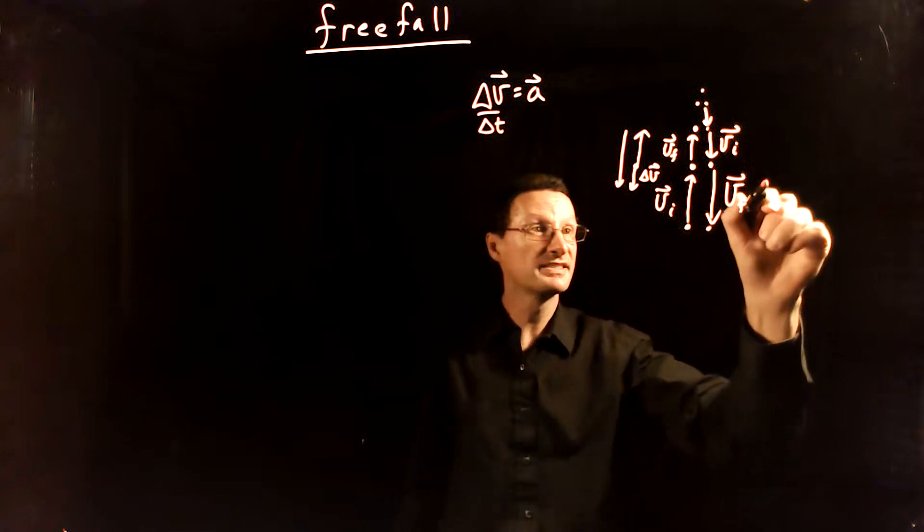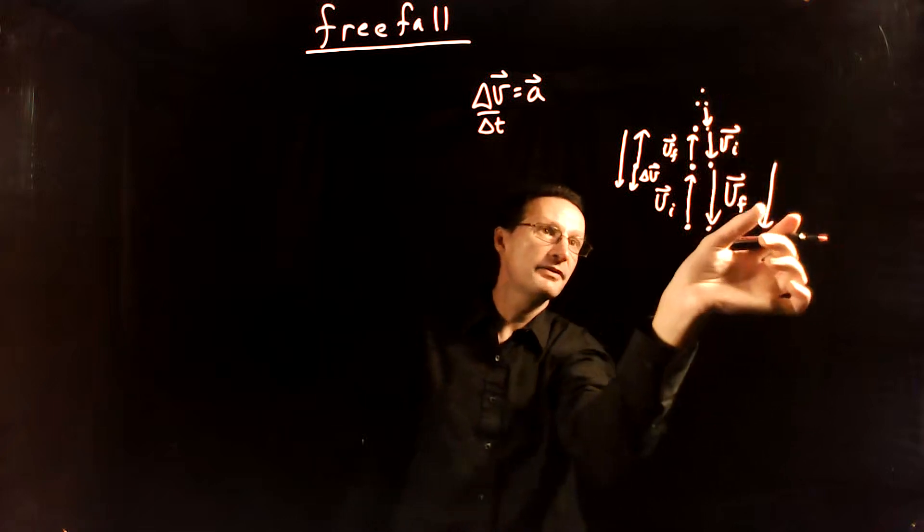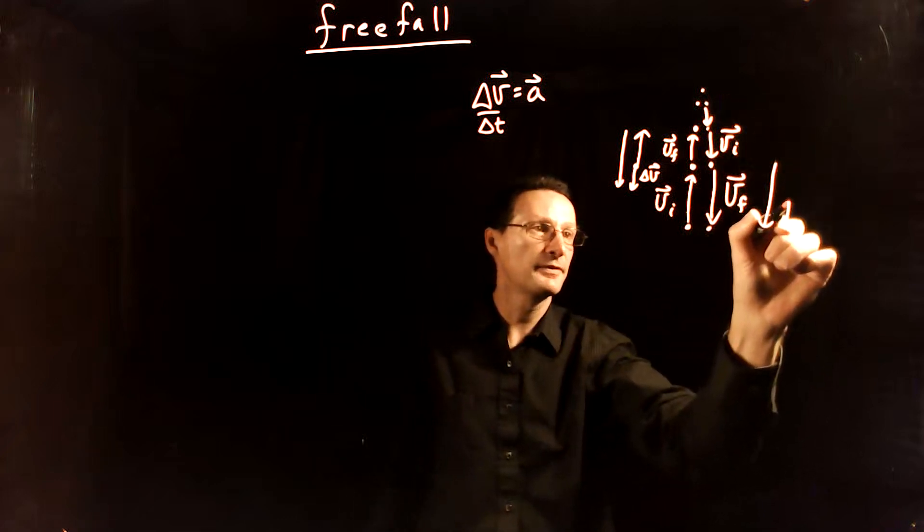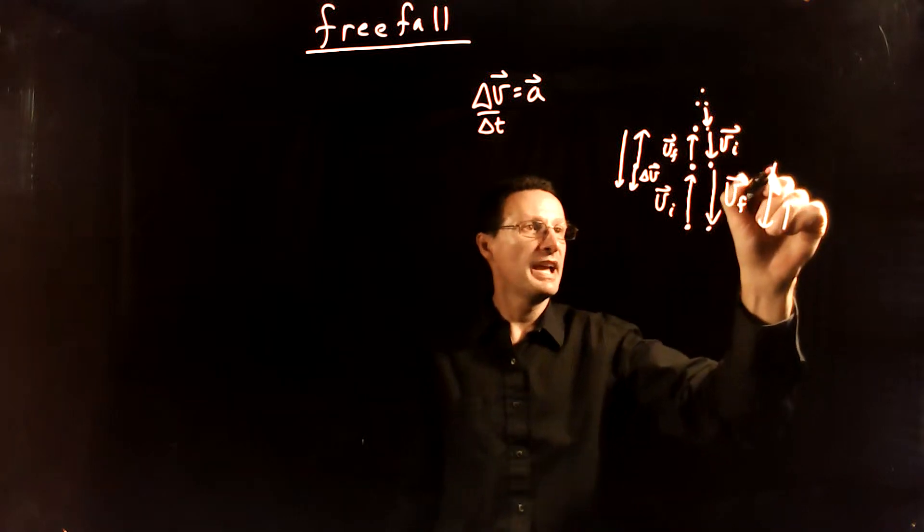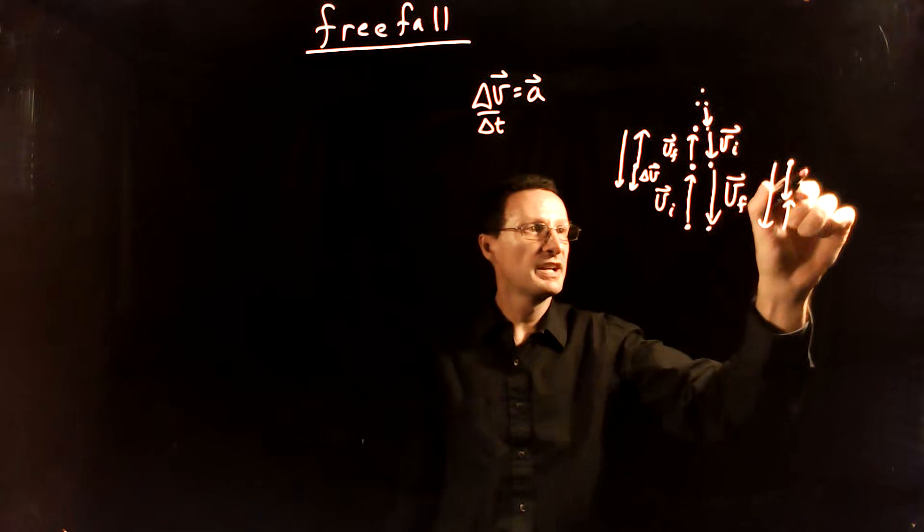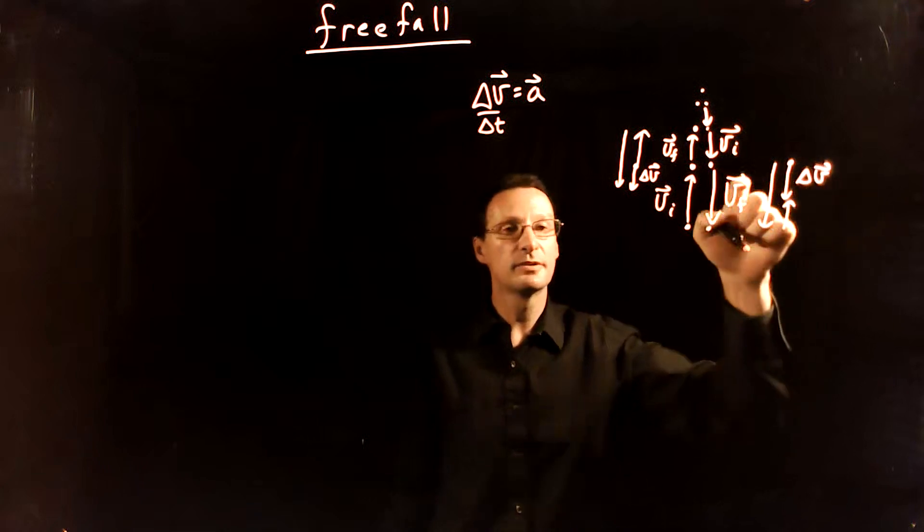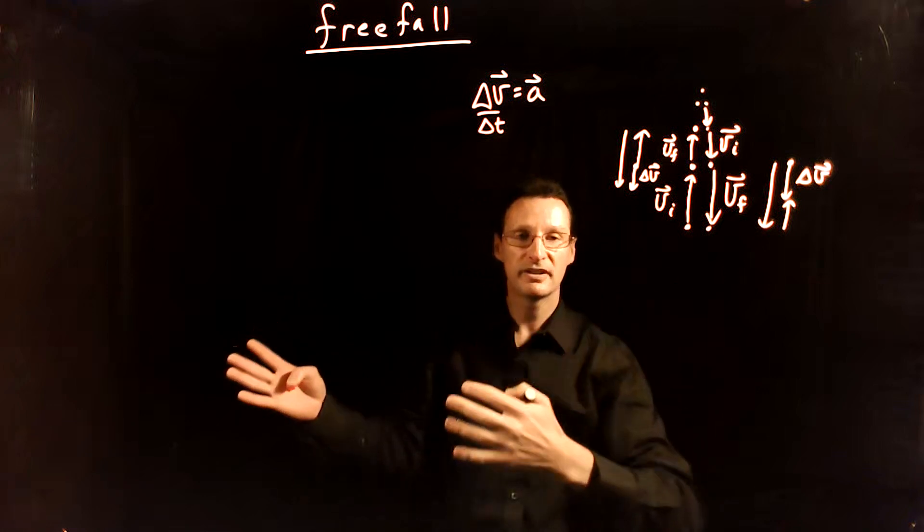And again we do the same thing. We take final minus initial, so we take the final velocity vector and add to that the negative of the initial velocity vector. I've got to flip the direction to get the negative of the initial. And again we start where we start and we finish where we finish, and therefore the delta v vector again points down.